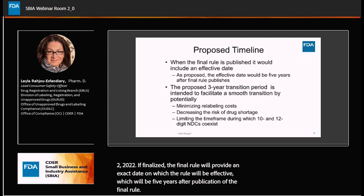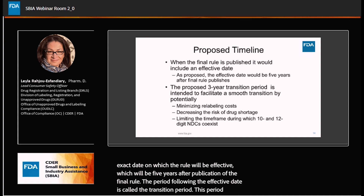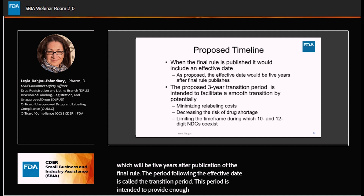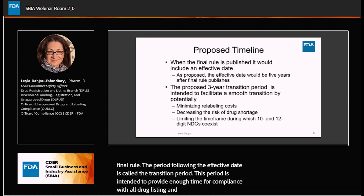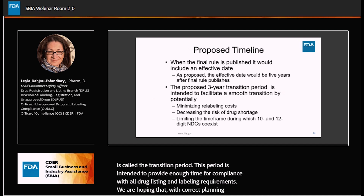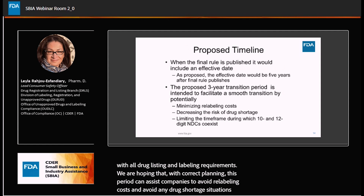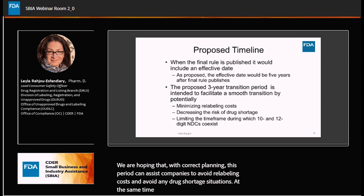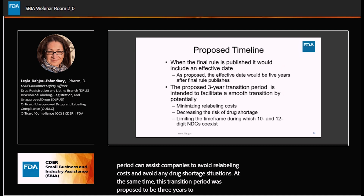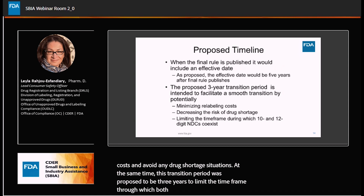The period following the effective date is called the transition period. This period is intended to provide enough time for compliance with all drug listing and labeling requirements. We are hoping that, with correct planning, this period can assist companies to avoid relabeling costs and avoid any drug shortage situations. At the same time, this transition period was proposed to be three years to limit the time frame through which both 10- and 12-digit NDCs will co-exist.